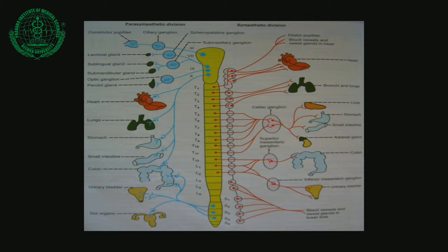There are 12 thoracic ganglia on each side, which are very unevenly spaced. The thoracic ganglia receive pre-ganglionic fibers from the thoracic segments of the spinal cord. The post-ganglionic fibers from the thoracic ganglia are distributed to the visceral organs in the thorax and the abdomen.